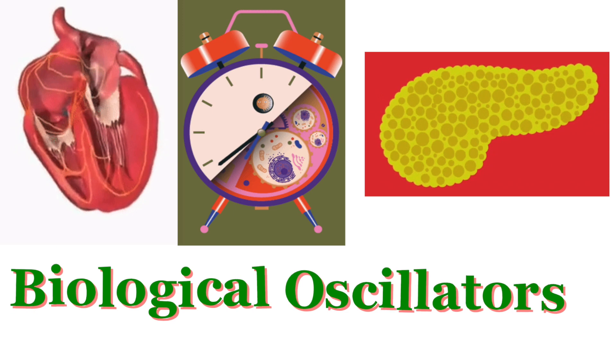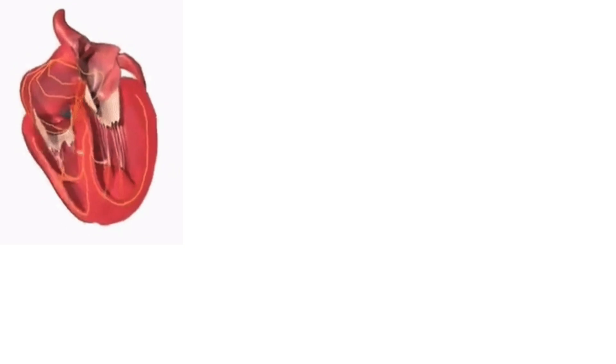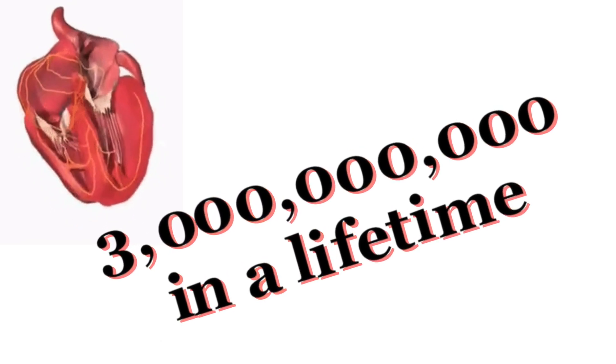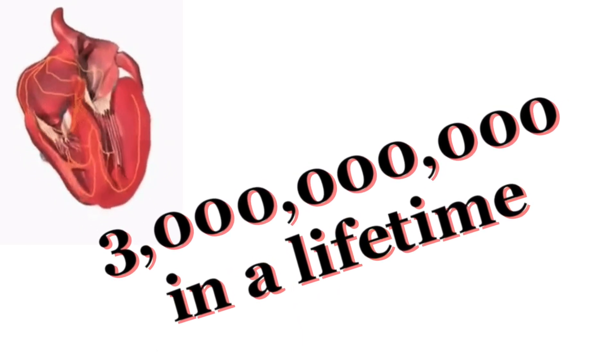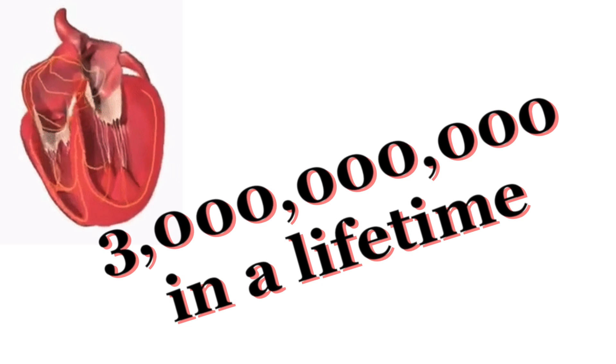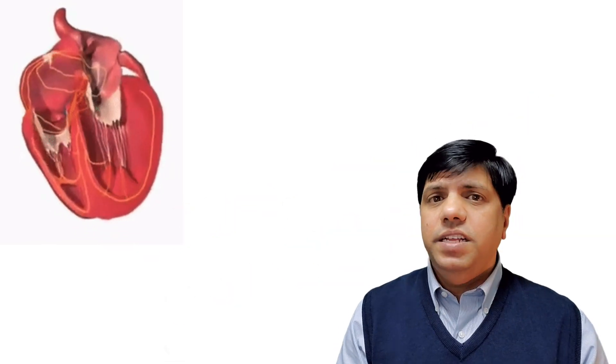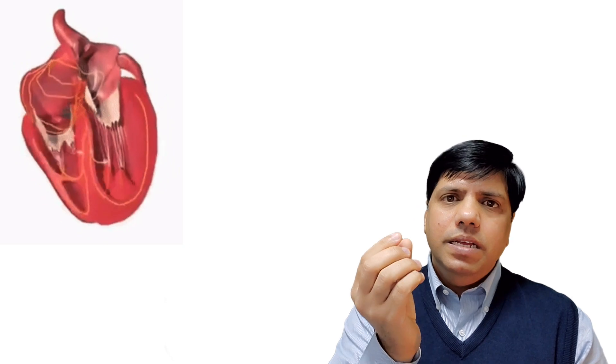So these are all examples of biological oscillators. Take for example our heart. Our heart will beat about three billion times in its lifetime. Whatever rate of heartbeat you have per minute, it is constant. So if you have 60 beats per minute, it will stay 60 beats per minute in resting condition. That's kind of fascinating.